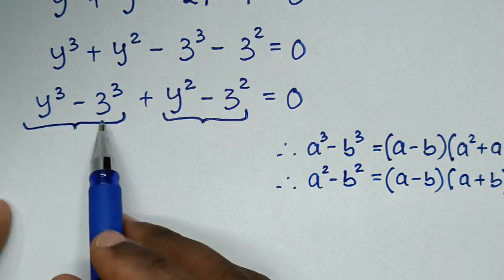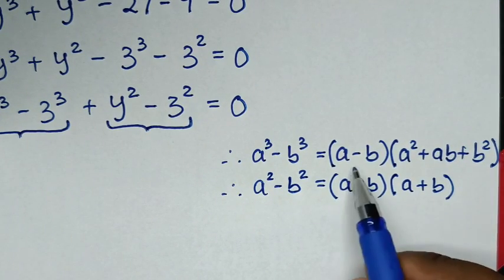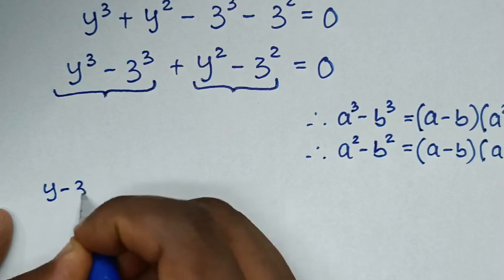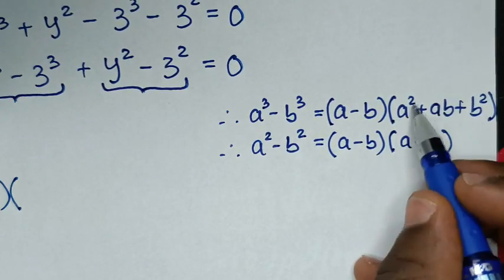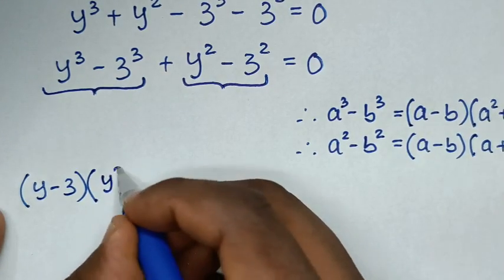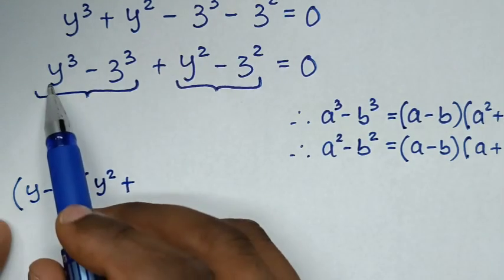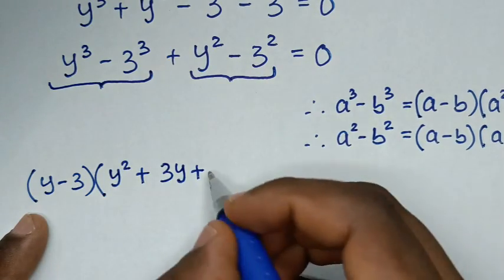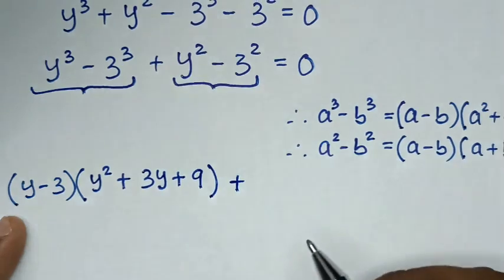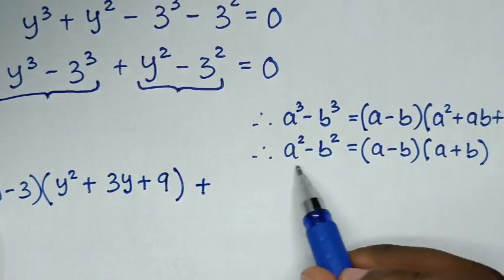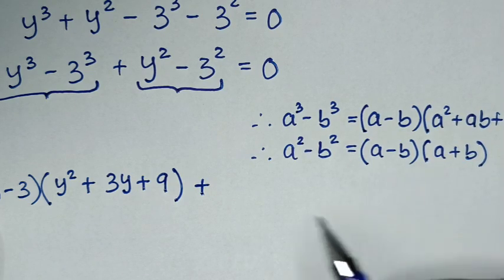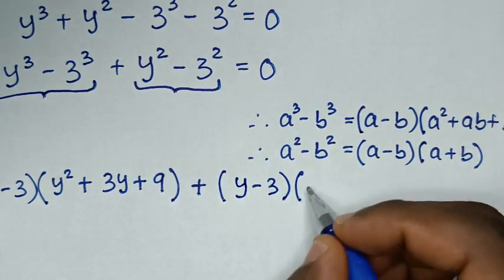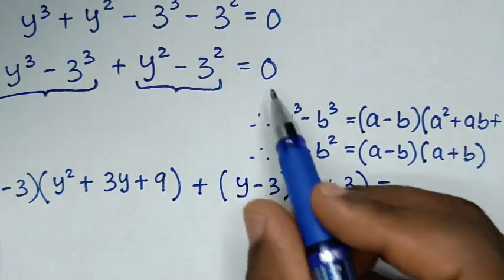Applying the difference of cubes rule: (y − 3)(y² + 3y + 9). Then applying the difference of squares rule to the second part: (y − 3)(y + 3), and the whole expression equals 0.